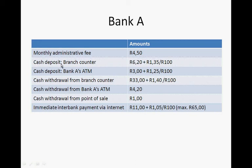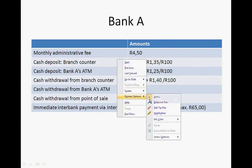This is the amount you pay when you make a cash deposit at the branch counter — if you go to a branch of your bank and make a deposit, you'll pay R6.20. And then you'll pay R1.35 for every R100 that you deposit. So if you deposit R500, let's quickly work that out.